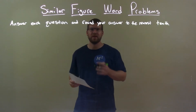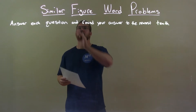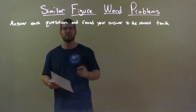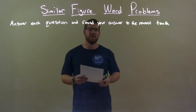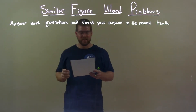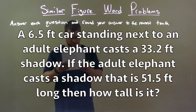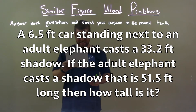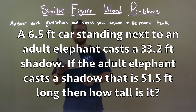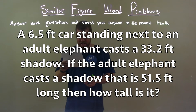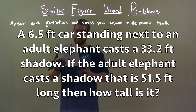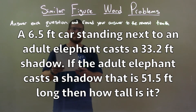I'm Sean Gannon and this is MinuteMath, and today we're learning about similar figure word problems. Answer each question and round your answer to the nearest tenth. A 6.5-foot tall car standing next to an adult elephant casts a 33.2-foot shadow. If the adult elephant casts a shadow that is 51.5 feet long, then how tall is it?